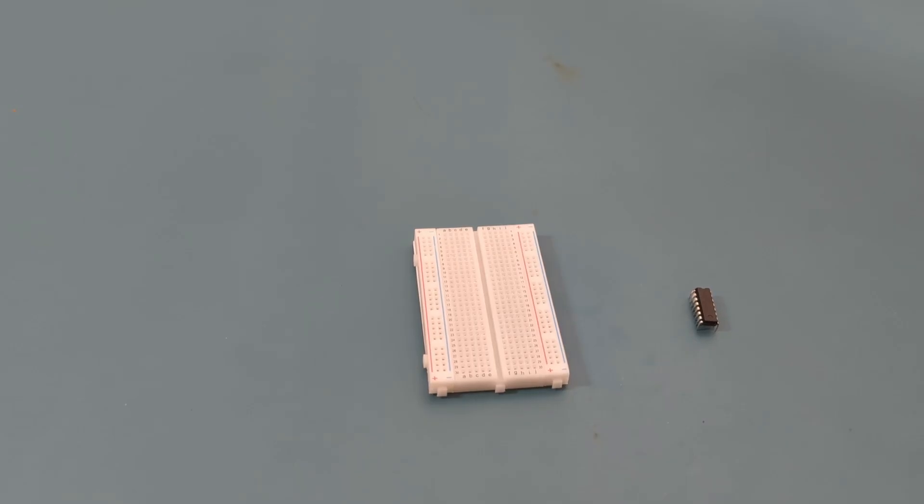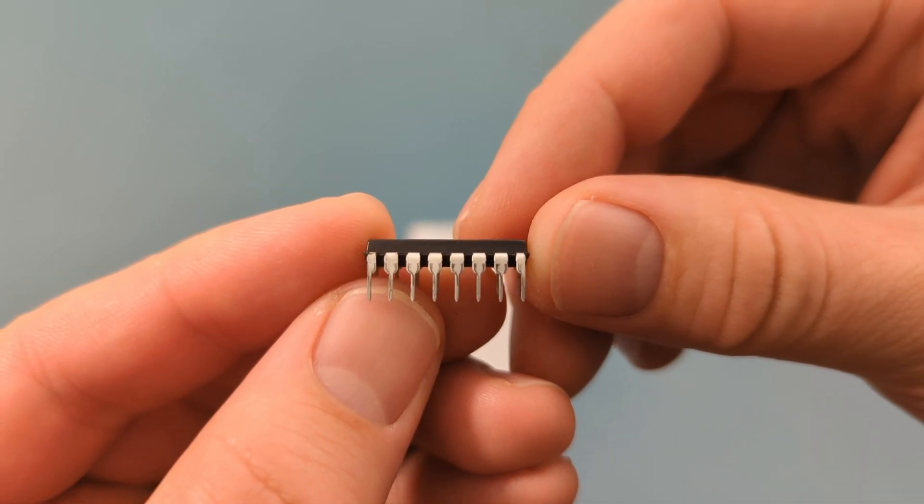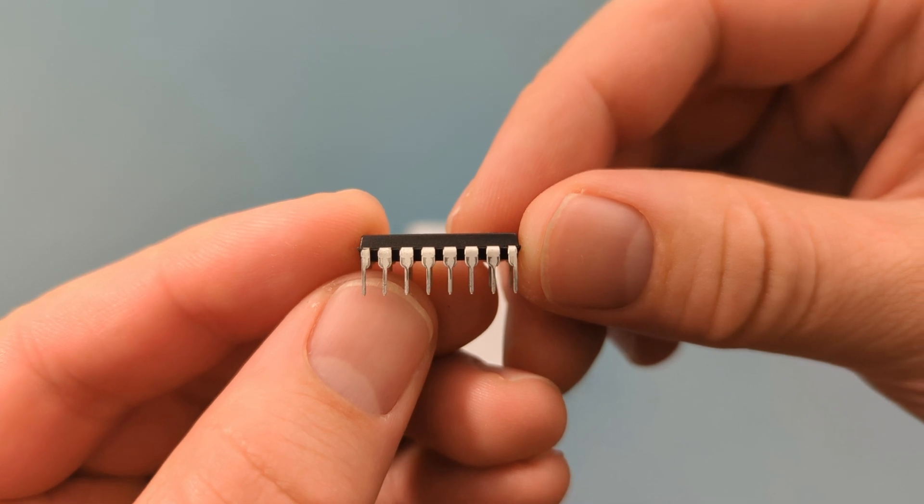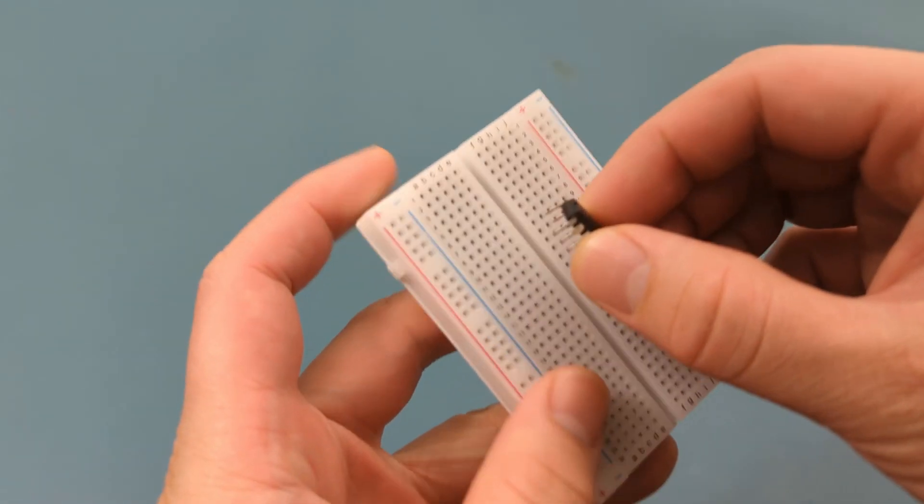Before we wrap up, here are a couple more pro tips. If you're using an IC or integrated circuit chip, place it over the center gap so that each row of pins on the chip has its own set of connected holes.